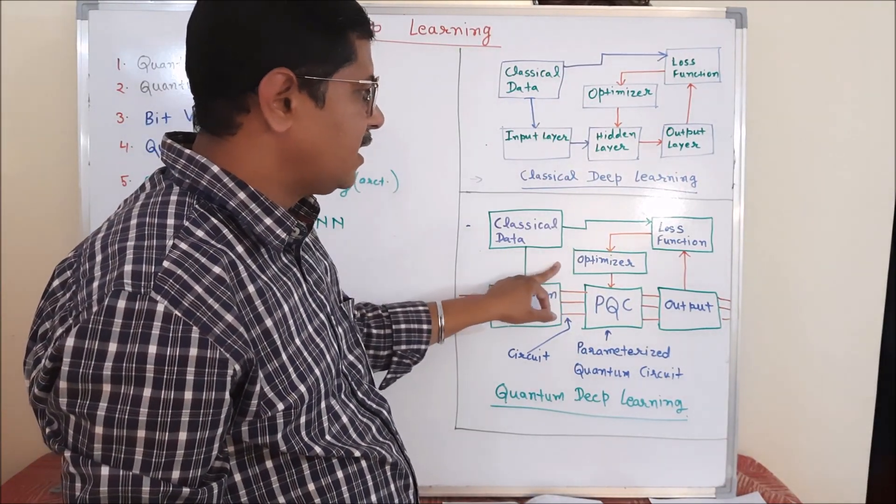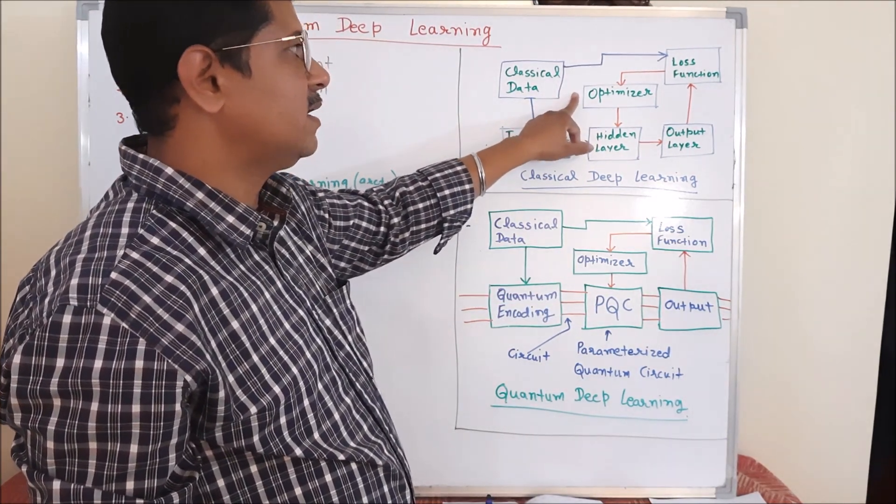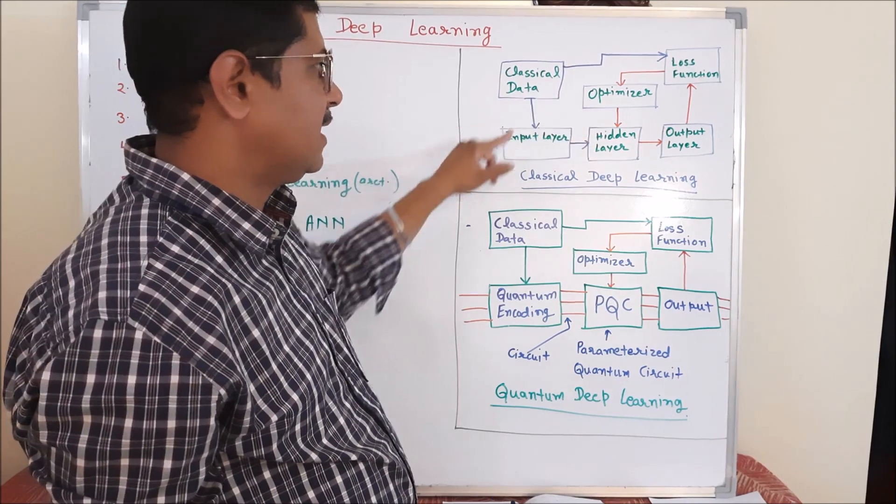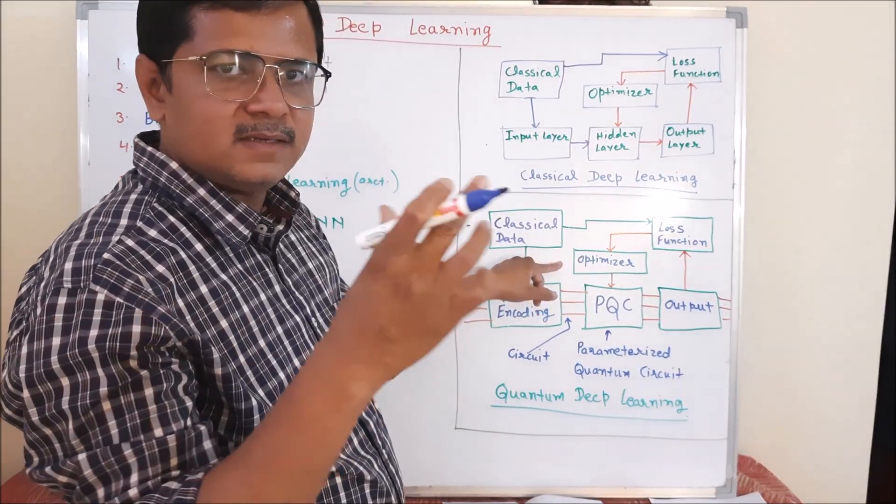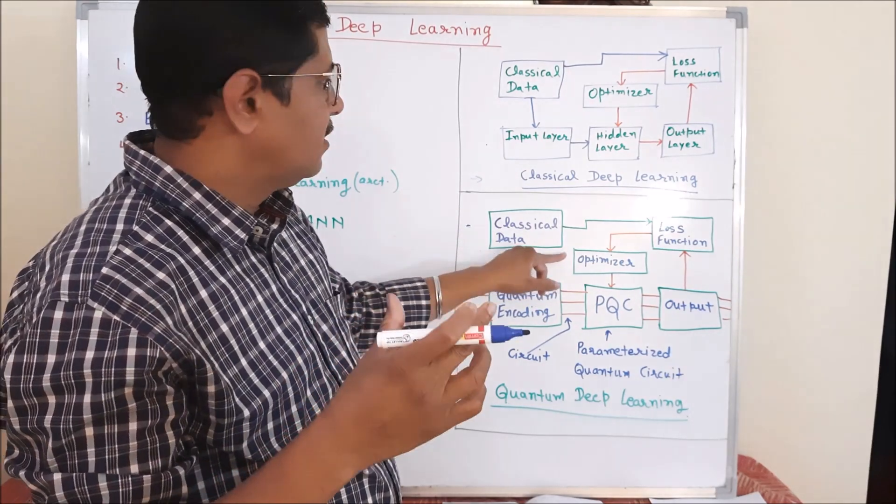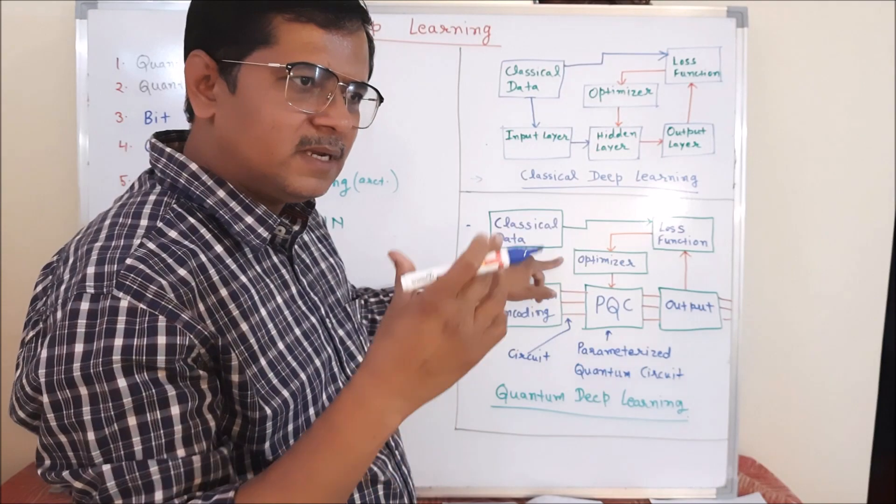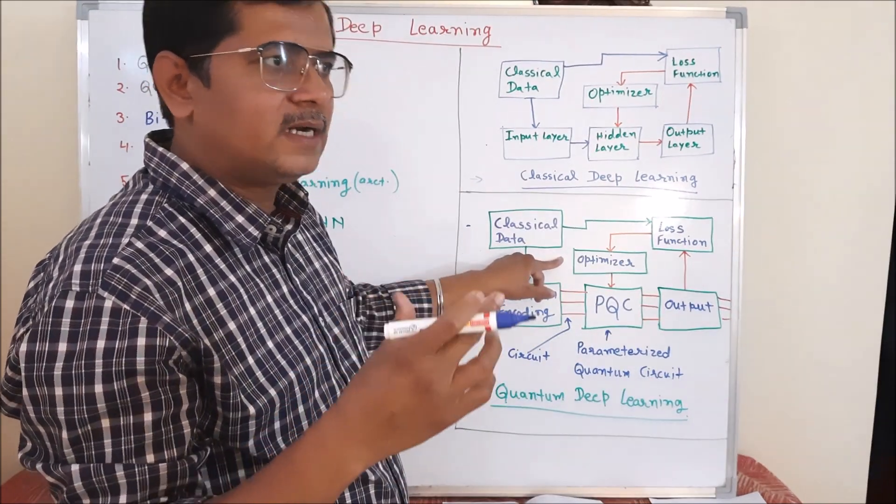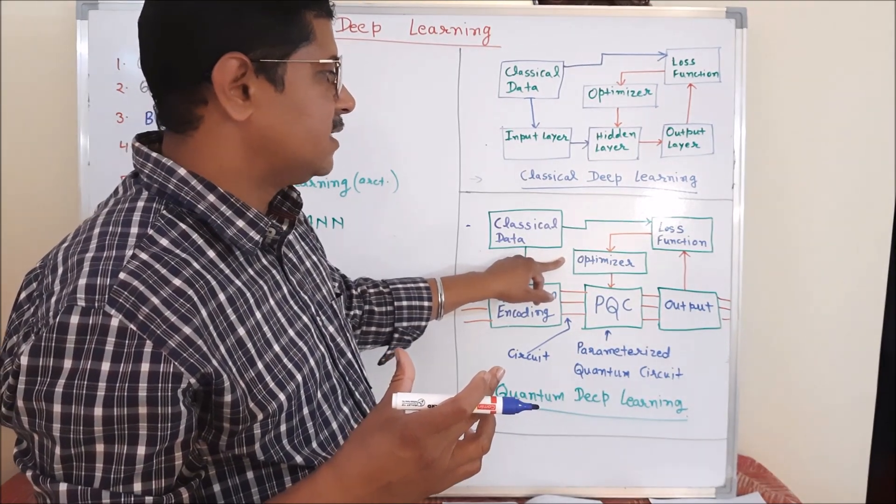So here, the gradient operation is not exactly similar to the gradient operation that we apply in classical deep learning. Here we use some shift operations to achieve the gradients. And there are a lot of similar kind of functionalities in quantum deep learning to achieve the gradient kind of thing.